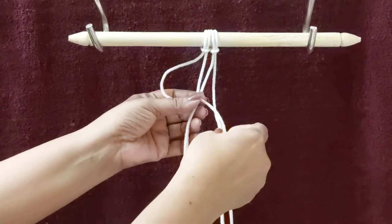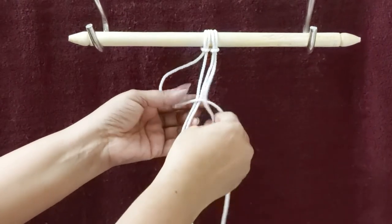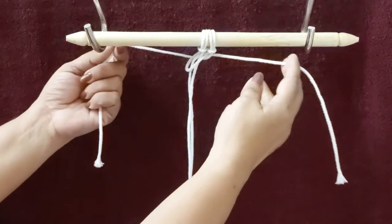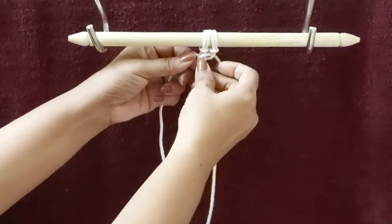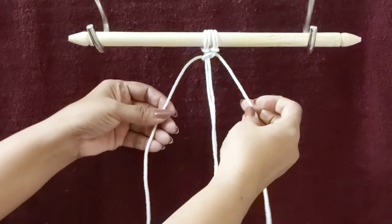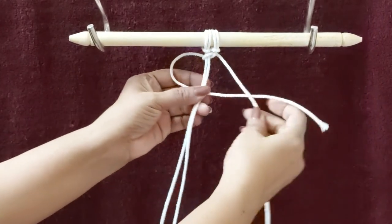We have four strings and we will use the first and the fourth string to make the square knot. For the square knot we use the first and the fourth string alternatively, but for this spiral knot we will keep using the first string and tie the knots.